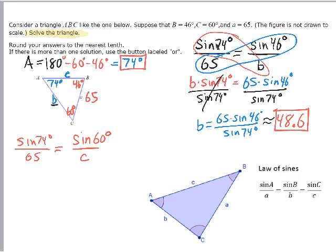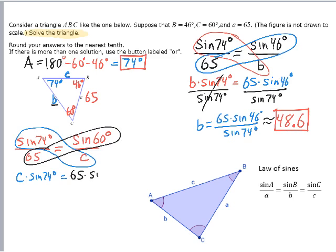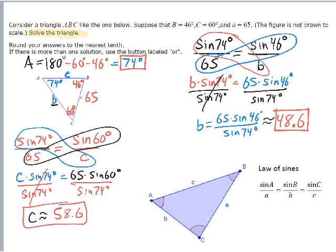Basically, it's the same process over again. We're going to cross multiply C times sine 74 degrees equals 65 times sine 60 degrees. You'll start seeing patterns as you do these more. Divide both sides by sine 74 degrees. When we stick that in our calculator, we'll get C as approximately, let's see what our calculator gets. You should be getting 58.6.